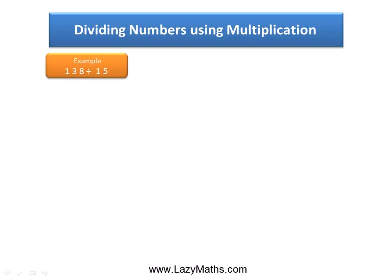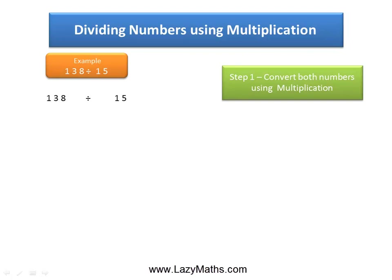Here's an example of dividing numbers using multiplication: 138 divided by 15. The first step is to multiply both numbers to convert them to an easier-to-work-with number. As you can see, 15 can be easily converted to 30 by multiplying 15 times 2.